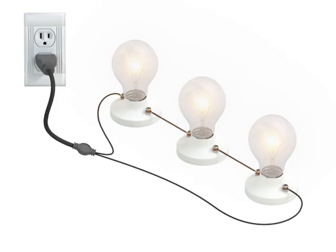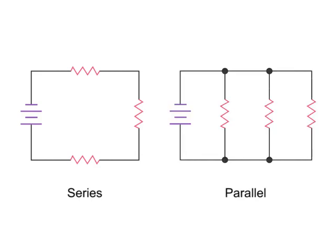Electronic components can be connected in a variety of configurations to form functional electrical circuits. The two simplest types of circuits are the series circuit and the parallel circuit.